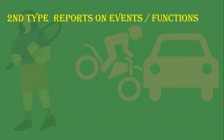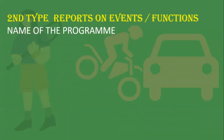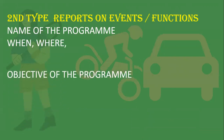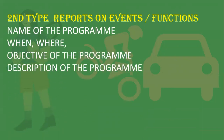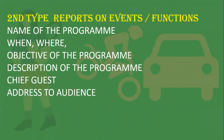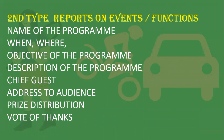The second type is reports on events or functions. For this type you need to include: the name of the programme, when and where it was held, the objective of the programme, description of the programme, the chief guest, address to the audience, prize distribution, and vote of thanks. Assume you are the school pupil leader asked to write a report on the annual day celebration, sports day, teachers' day, children's day, or any similar function.